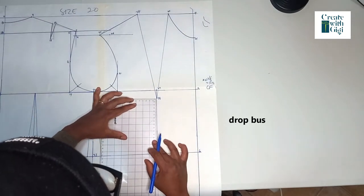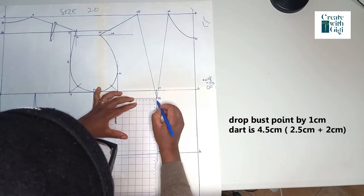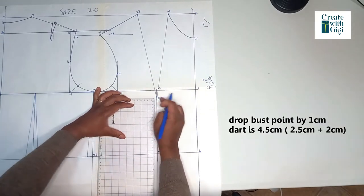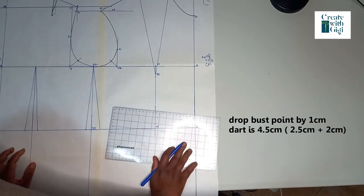For the front, we're going to take out 4.5 centimeters in total. But first of all, we drop down the bust point by 1 centimeter because we don't want our bust points to be pointy.